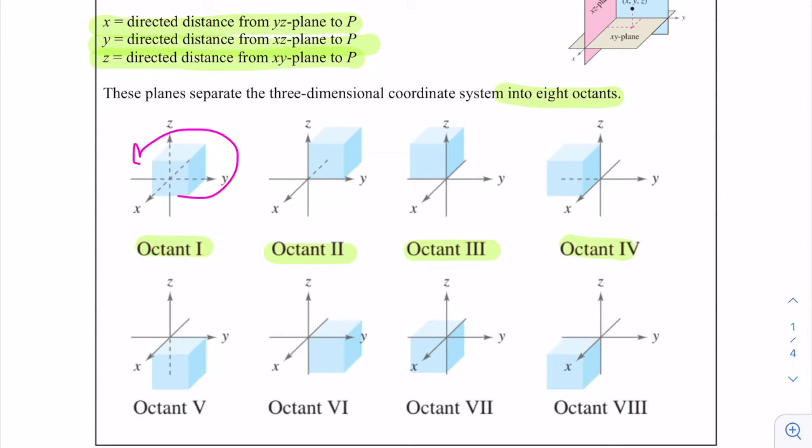Octant five will be right below octant one. And then if we go counterclockwise around, we'll go to octant six, seven, and eight.